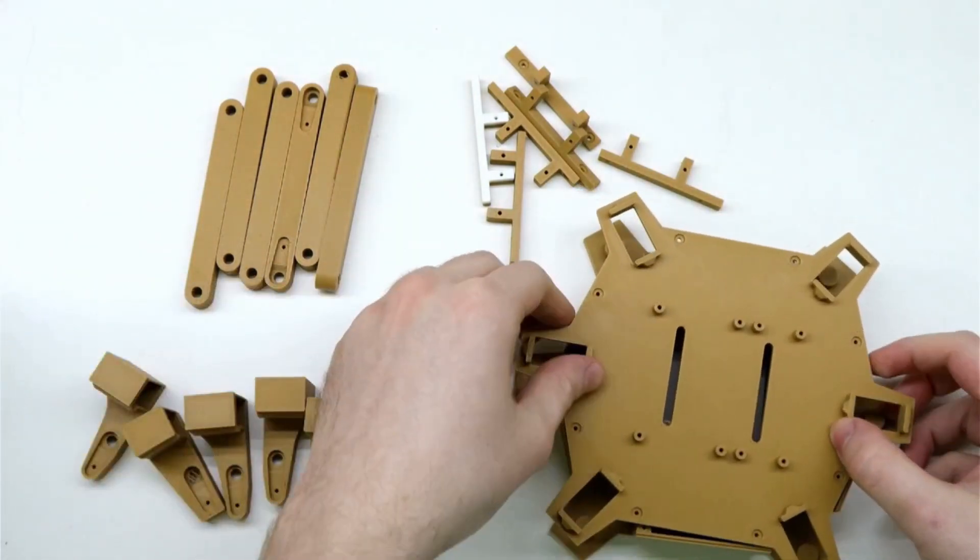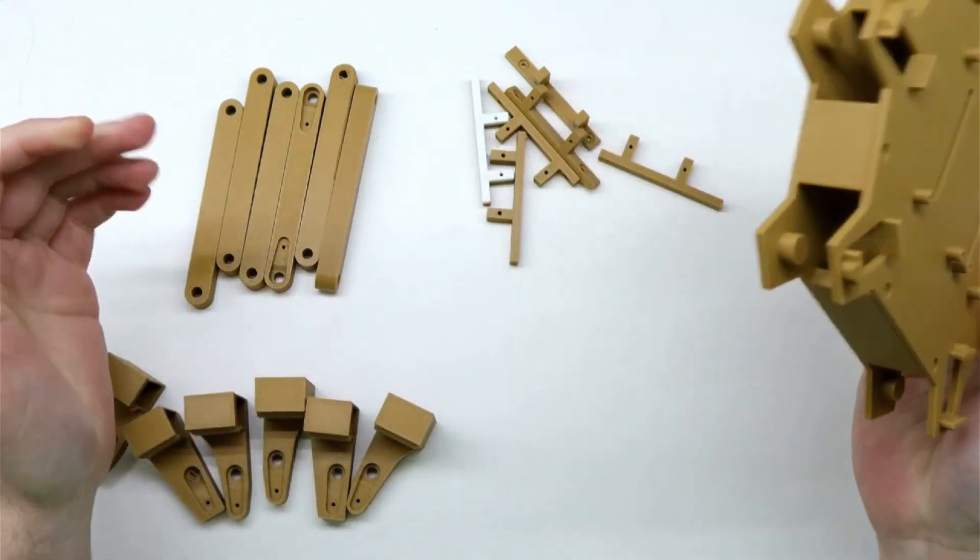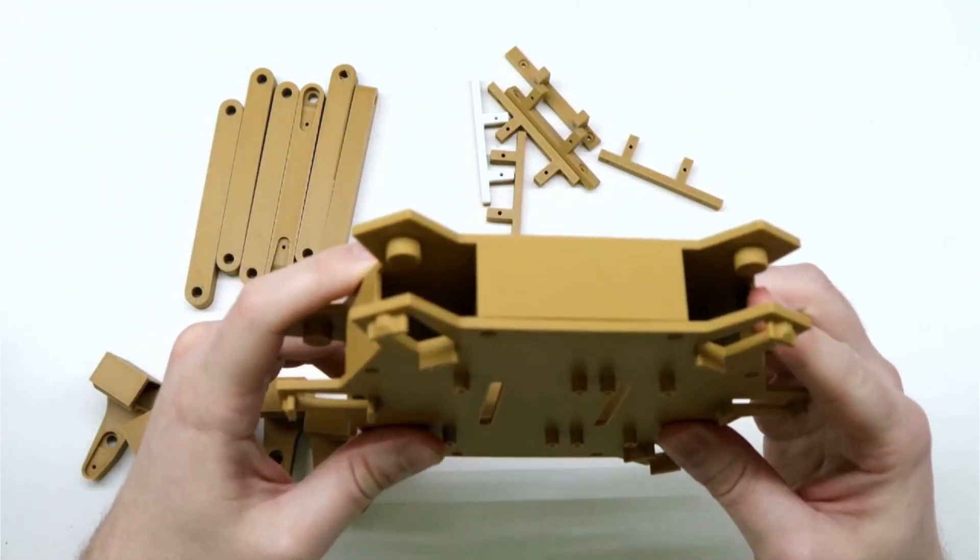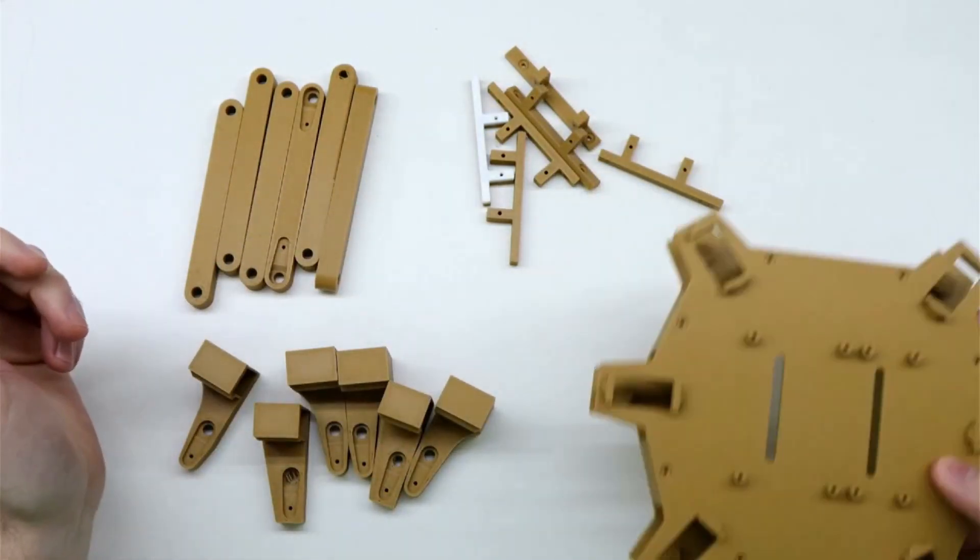I printed these parts out in brown PLA because I happen to have some extra brown PLA from another project that I don't need anymore. It will work perfectly fine for a prototype and then I can print the final version in different colors to get the right color scheme.